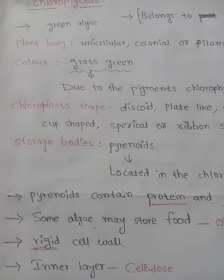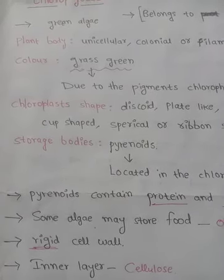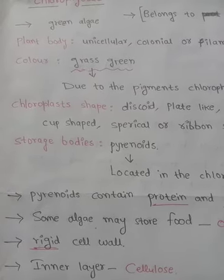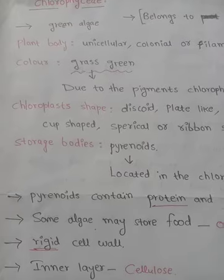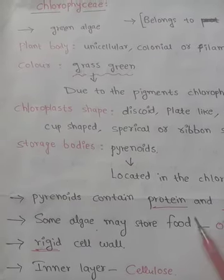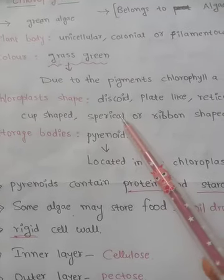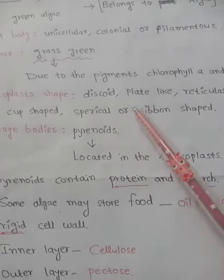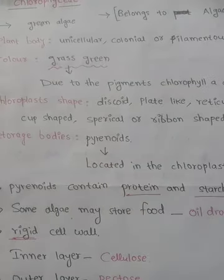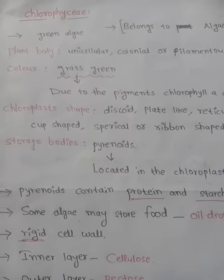Chlorophyceae members are photosynthetic — they can prepare their own food by the process of photosynthesis. The shape of the chloroplast in Chlorophyceae is discoid, or plate-like, or reticulate, or cup-shaped, or spherical, or ribbon-shaped in different species.